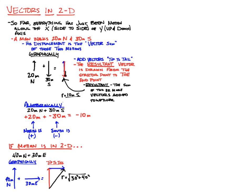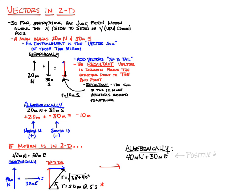Adding them together necessarily means doing the tip-to-tail method. The resultant comes out to be 50 meters, and then we have to find the angle, which comes out to be 53 degrees. Algebraically, we can't just assign a positive and a negative. We have to break this up into x-motion and y-motion, because positive and negative are not descriptive enough. Negative 30 meters east doesn't tell me it's different from north — it just tells me it's opposite.